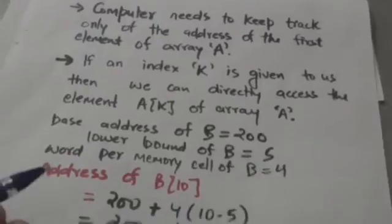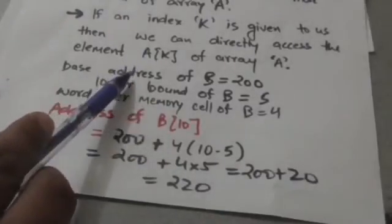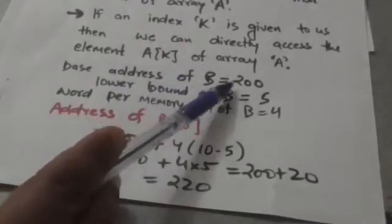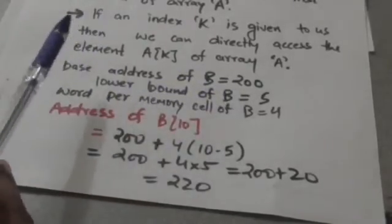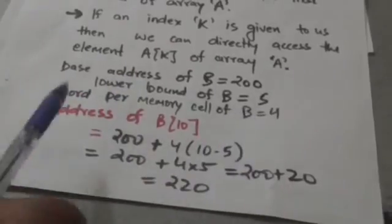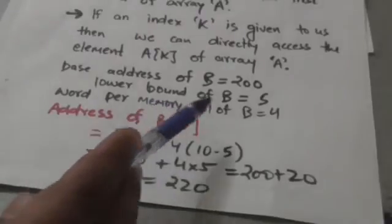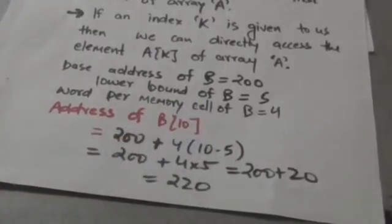For example, there is a linear array B with base address 200, lower bound 5, and words per memory cell equal to 4.